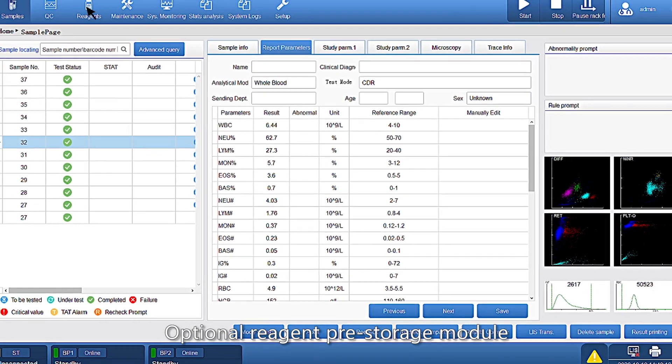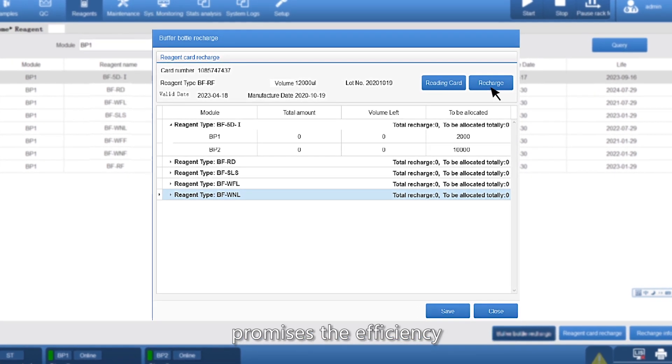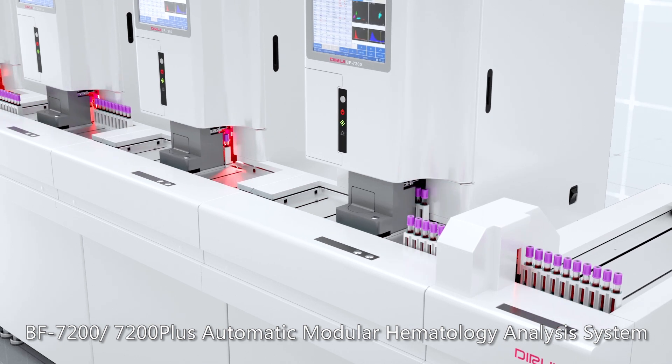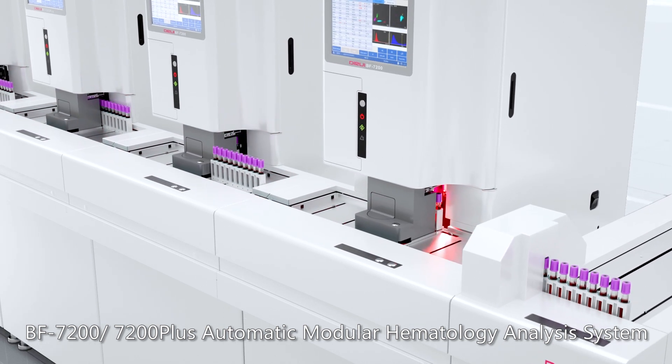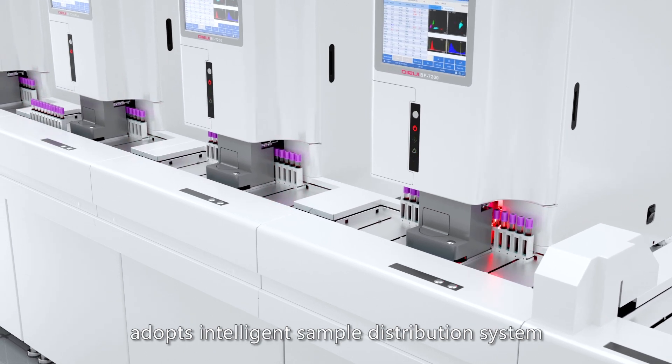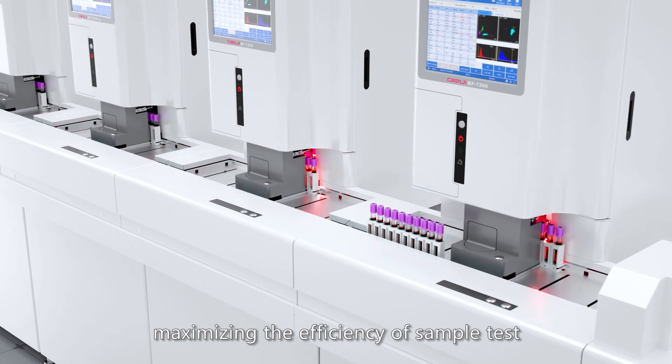Optional Reagent Pre-Storage Module is capable of online reagent filling, promises the efficiency. BF7200, 7200 Plus adopts intelligent sample distribution system, maximizing the efficiency of sample test.